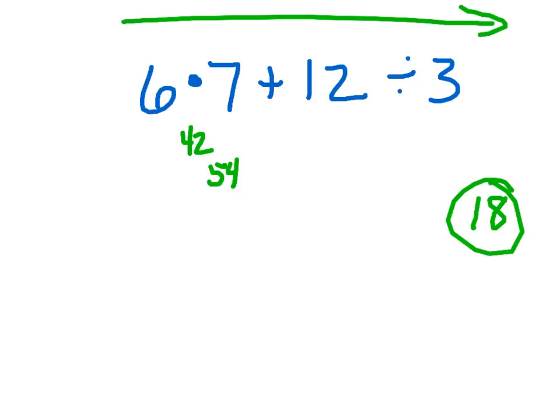What if we went ahead and started off with adding? 7 plus 12 gets us 19. 19 times 6 gives us 114, and then 114 divided by 3 comes out to 38. So there are several different answers that you can get with this equation depending on the order you use.